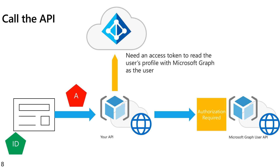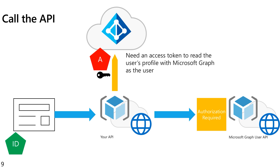To solve this, the API goes to Azure Active Directory and provides two things. First, it provides the access token that it was given — the one that allowed the client application to call the API on behalf of a particular user whose identity is embedded in that access token. Second, it needs a client credential showing that it is in fact the entity that owns this token — that is, it knows the secrets for the app that's registered, which creates the audience of that token.